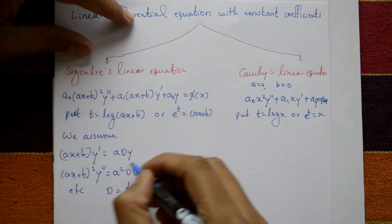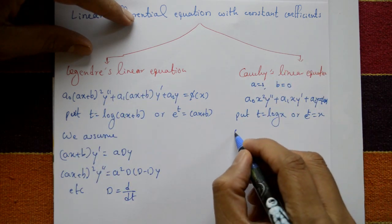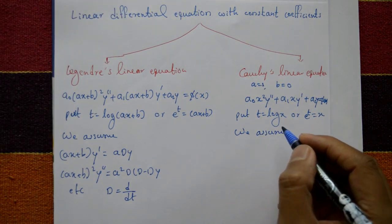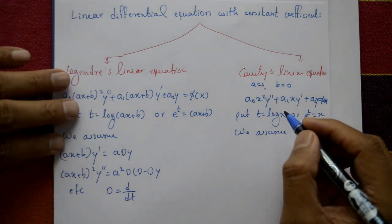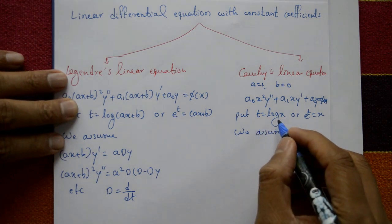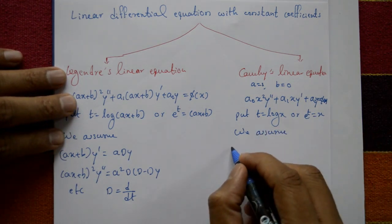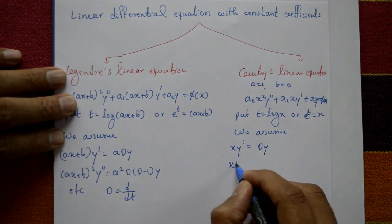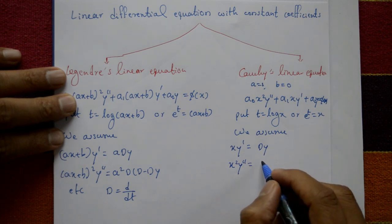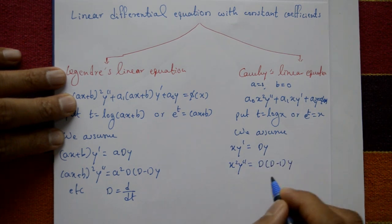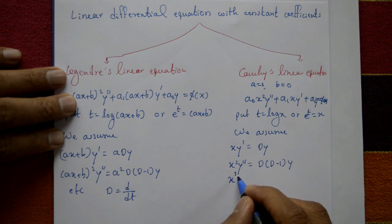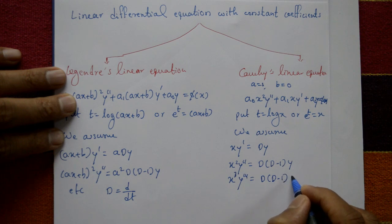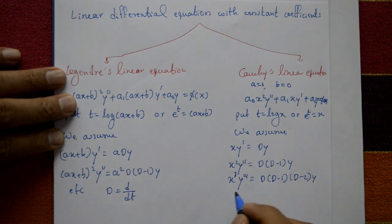For Cauchy's linear equation, with substitution t equal to log x, the assumed results are: x times y-dash equals D times y, x-squared times y-double-dash equals D(D minus 1) times y, and x-cubed times y-triple-dash equals D(D minus 1)(D minus 2) times y, and so on. Here D stands for d by dt.